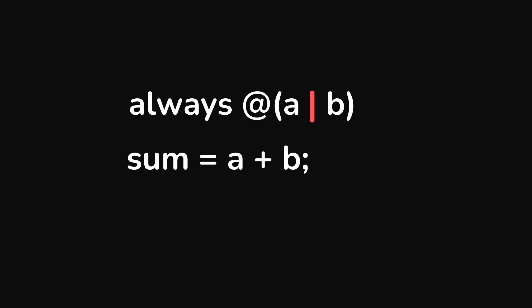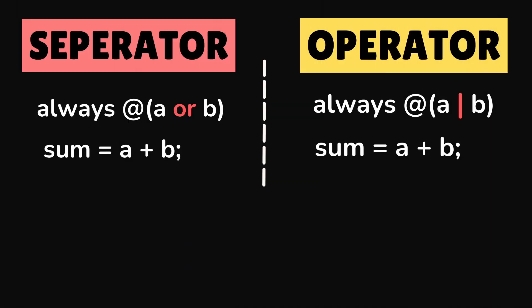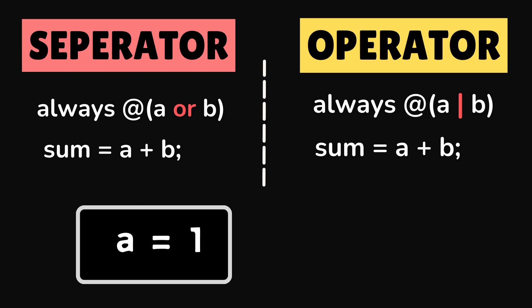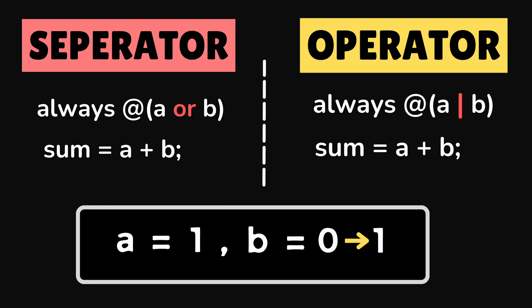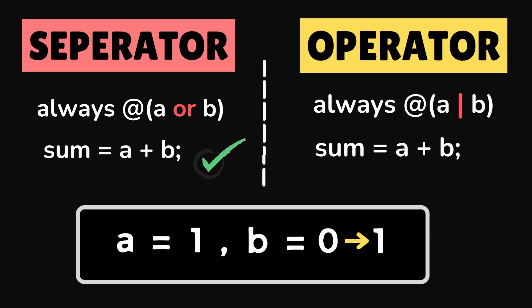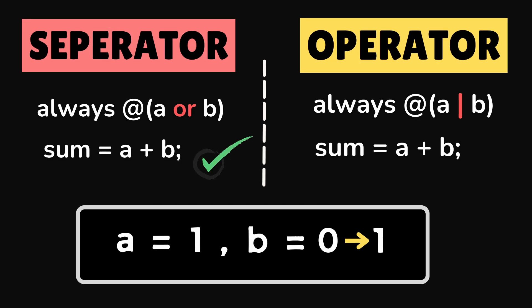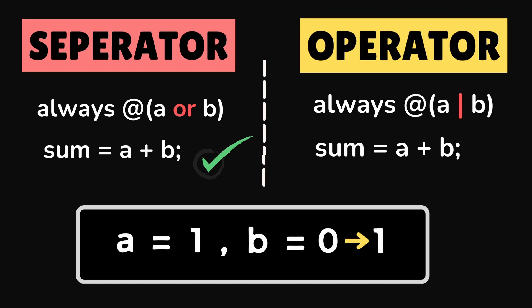This always block will trigger when A or B changes from 0 to 1 or 1 to 0. Let's take an example to understand the difference in separator and operator always blocks. Let's say A is 1 and B changes from 0 to 1. When this change happens in B, the separator always block will be triggered, whereas the operator always block will not be triggered as the result of A or B operation hasn't changed.